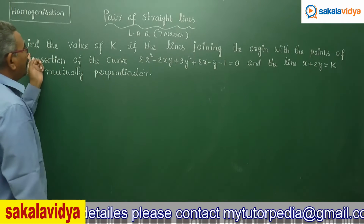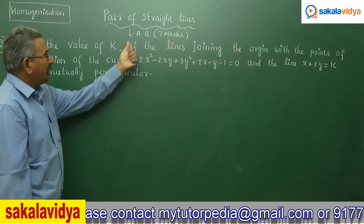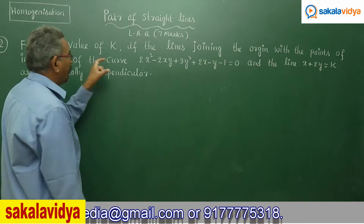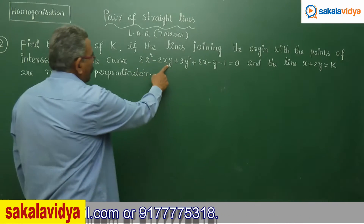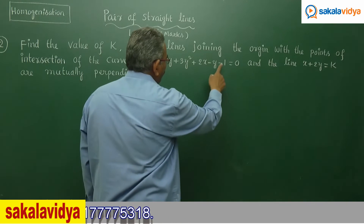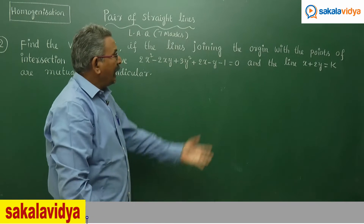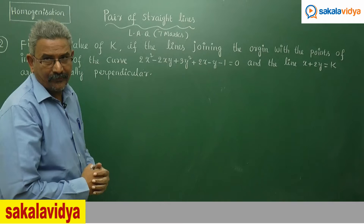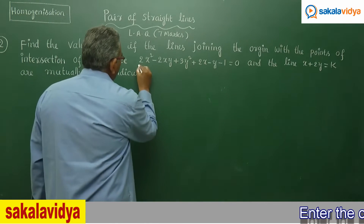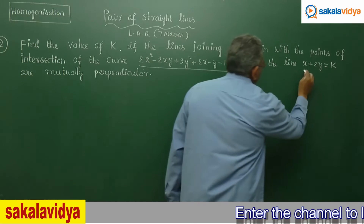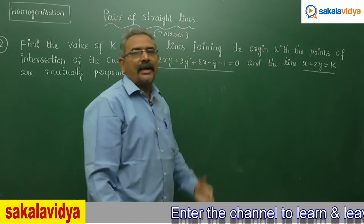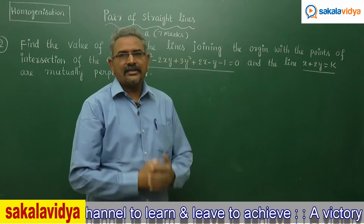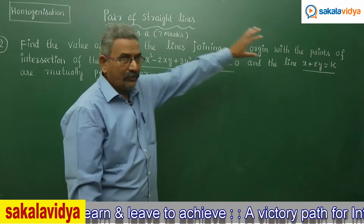The problem states: find the value of k if the lines joining the origin with the points of intersection of the curve 2x² − 2xy + 3y² + 2x − y − 1 = 0 and the line x + 2y = k are mutually perpendicular. The equation of the curve has to be homogenized with the equation of the line to get the combined equation of the two lines — that is, a pair of straight lines.